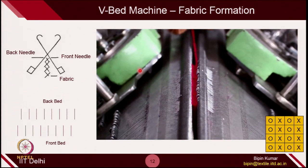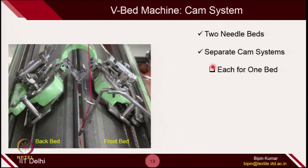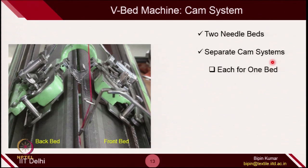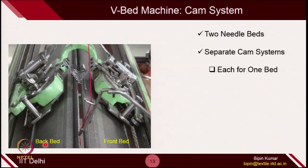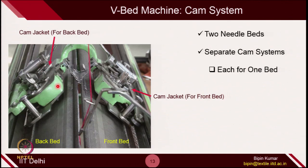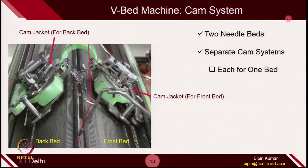To operate 2 different beds, naturally we need 2 different cam systems. Each cam system will be responsible for needle movement in that particular bed. You have the front bed, you have the back bed, so you need 2 cam jackets. Cam jacket 1, which is shown in the figure, is for the front bed, and the other cam jacket is for the back bed. You might have seen the cam jacket for single bed machines in week 2 — the nature of this cam jacket is exactly the same. They are actually interacting with the butt of the needle and providing reciprocative movements to the individual needles of that particular bed. Since it has 2 needle beds, we need 2 different cam systems, each for one bed.